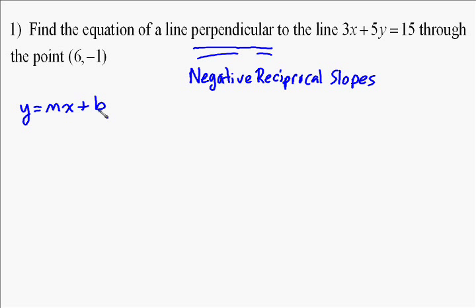To find slope, we always look at y equals mx plus b. That means we need to do some manipulation on 3x plus 5y equals 15. We need to solve for y to get into the slope-intercept form.